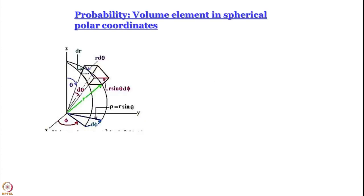Let us work out an expression for the volume element in spherical polar coordinates — I think we have done it earlier, but we will do it again. How do I get a volume element? If we are talking about xyz coordinates, it is simple: increase x by a small amount dx, increase y by a small amount dy, increase z by a small amount dz. So the volume element would be dx dy dz.